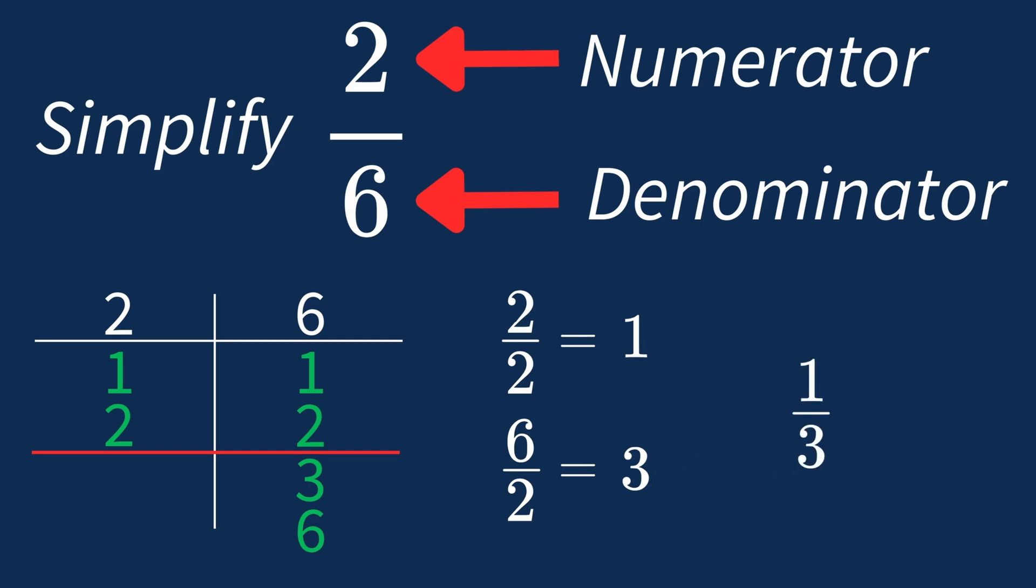So we've successfully simplified our fraction from 2 over 6 to 1 over 3. And we know that 1 over 3 is its simplest form, because the only common factor between 1 and 3 is 1. And when the highest common factor is 1, we know we've hit the simplest form.